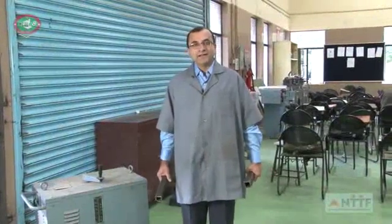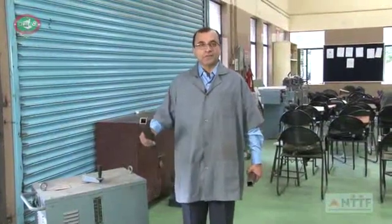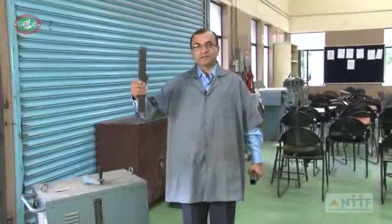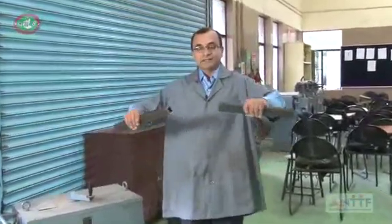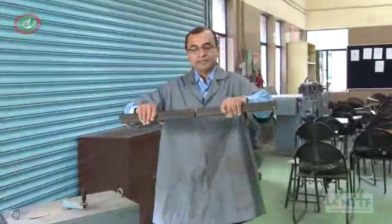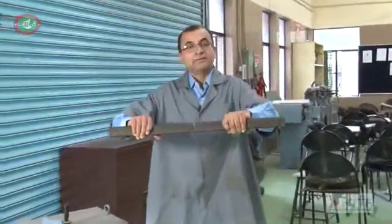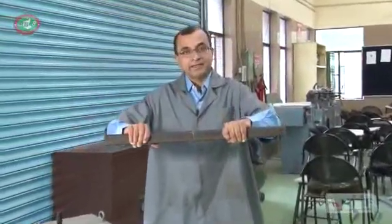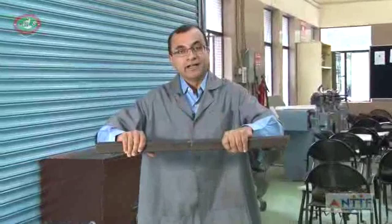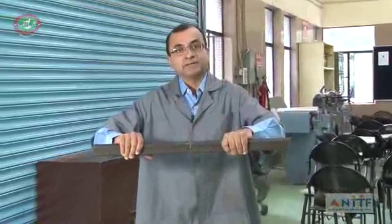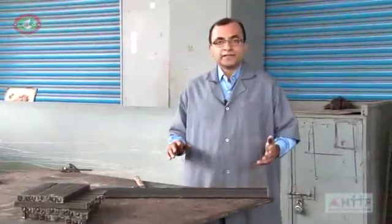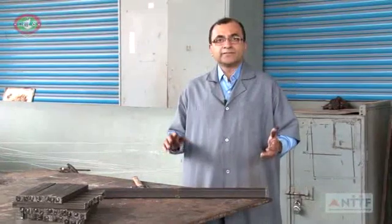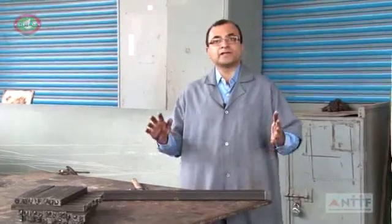Let us know the definition of welding. Welding is a process of joining two components — I have a component in my right hand and a component in my left hand. It's a process where these two components get joined permanently at their molecular level. It is a permanent joining.